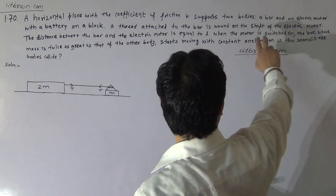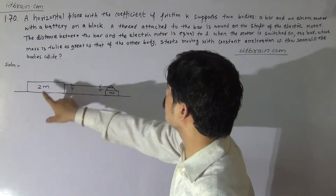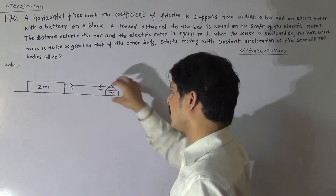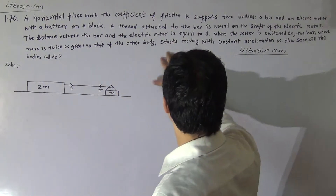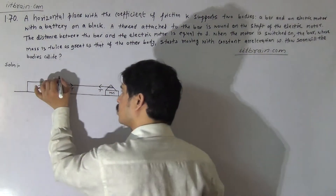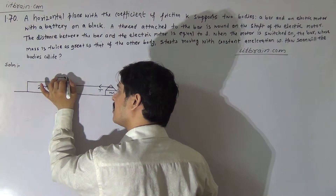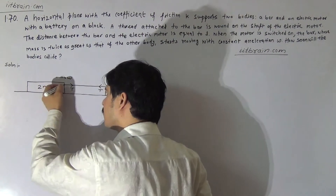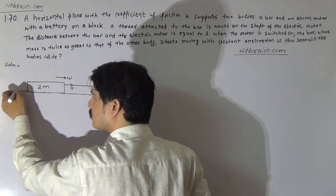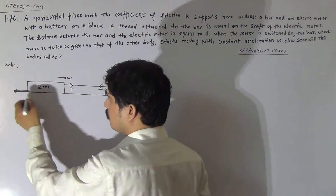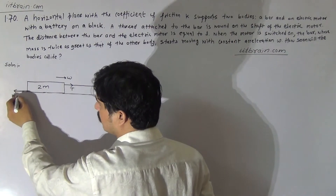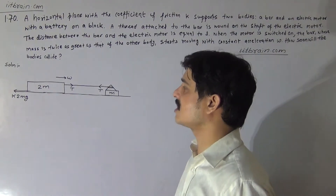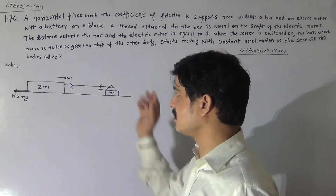It is given that when the motor is switched on, the bar whose mass is twice as great as that of the other body — the motor and block combined have mass m, so the bar's mass is 2m. The other body starts moving with constant acceleration w in this direction. For this body's free body diagram, the forces are: string tension, and friction from the ground. The value of friction is k times 2mg.